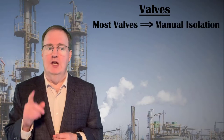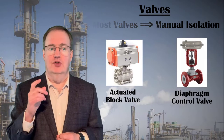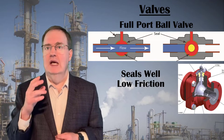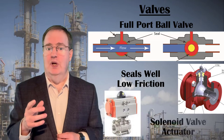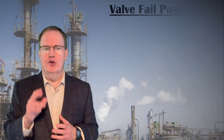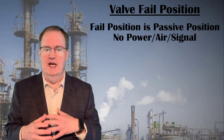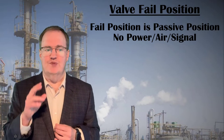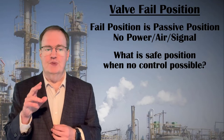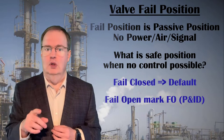There are thousands of valves in a process plant. Most are manual valves for isolation purposes, for maintenance and safety. We will focus on actuated block valves and control valves used by the control system. The most common type of actuated block valve is the full-port ball valve, which seals reliably when closed and generates no extra friction when open. Most actuators are solenoid valves that allow or stop compressed air when triggered by an electrical signal. Almost all valves have a passive or fail position — the position they revert to if they lose control signal, compressed air, or electrical power — accomplished by the action of a spring. Valves can be set up to be fail open or fail closed; engineers should choose based on which is safest. Fail closed is the default; all fail open valves should be marked F-O on P&IDs.